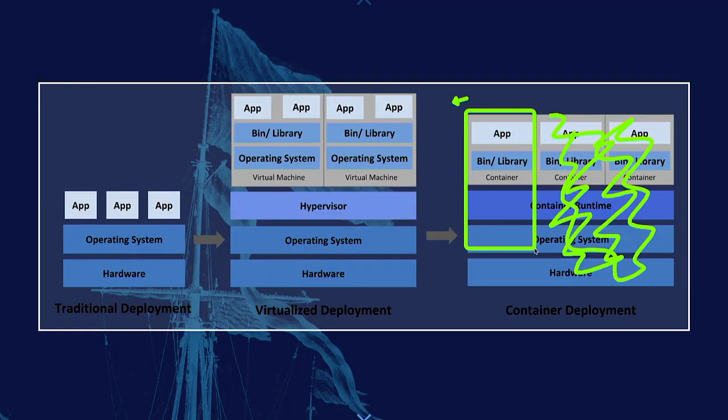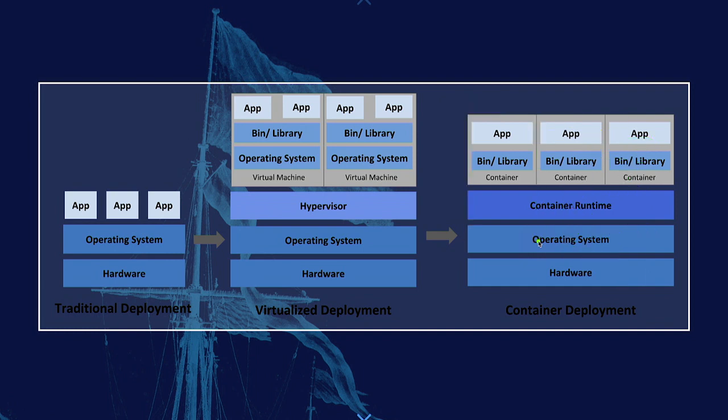It can only use the resources specifically assigned to it within its fragment. That's done using tools in the Linux kernel called namespaces and cgroups. Windows has similar constructs. As far as it's concerned, it is the only thing running on the server. We have very high utilization and no collisions. That's what a container is.